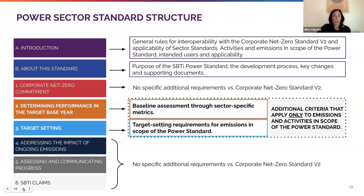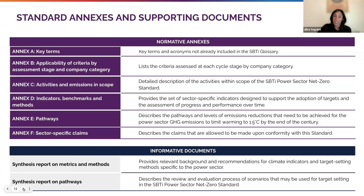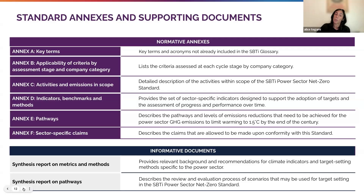Here you can see a snapshot of the overall eight sector-specific criteria included in the power standard, where in Chapter 3 the requirements for target setting are grouped by activity type. It's worth mentioning that the standard also includes some normative annexes, such as Annex D, which describes the metrics and target setting methods used in the power standard, and Annex E, which details the underlying pathways. Additional information and background is also available in the informative documents published along with the standard — the synthesis report on metrics and methods, and the synthesis report on the pathways.